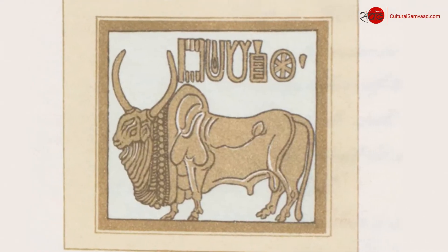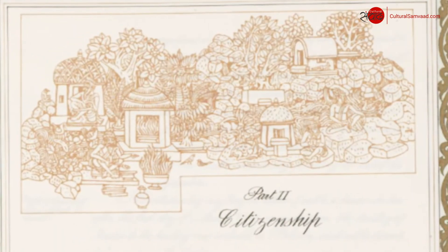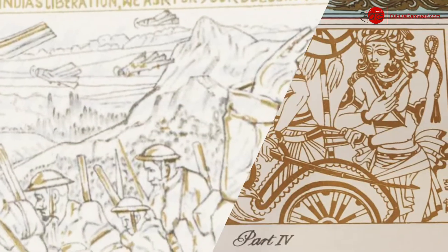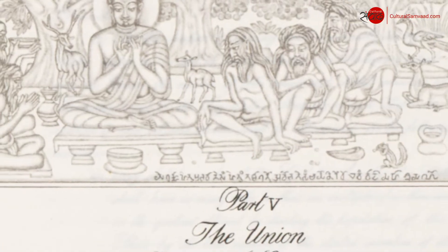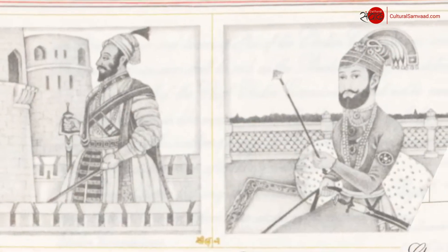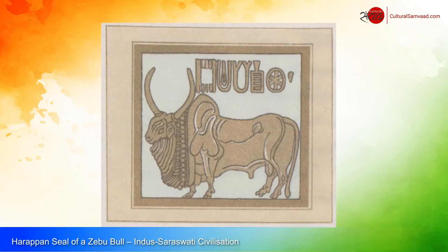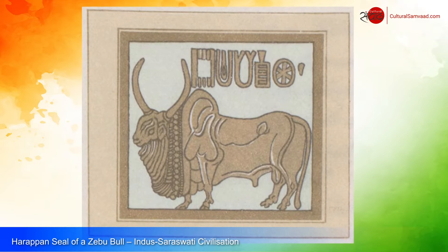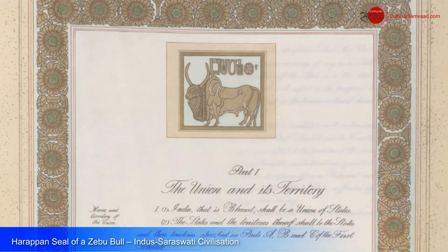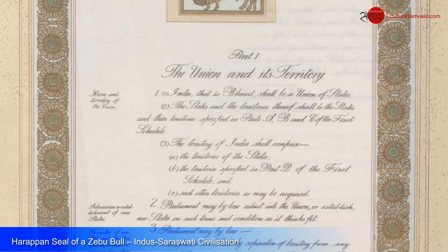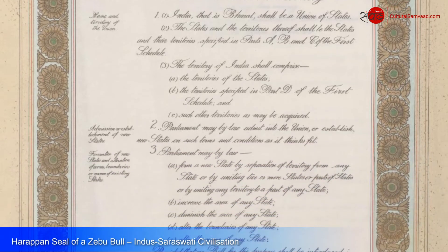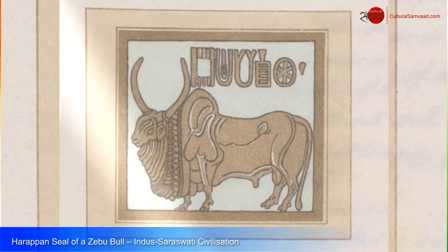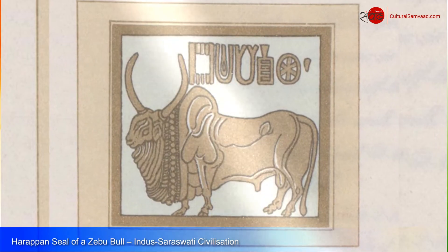Each of the 22 parts of the Constitution were illustrated, and these masterpieces encompass an unimaginable period of time, subjects, and artistic styles. A seal with an impressive Zeebubul and a short inscription in the undeciphered script of our early ancestors from the pioneering Harappan or Indus-Saraswati civilization adorns the opening page of Part 1: The Union and its Territory.